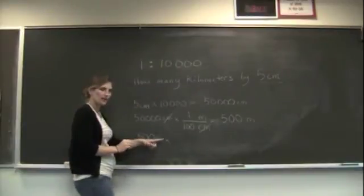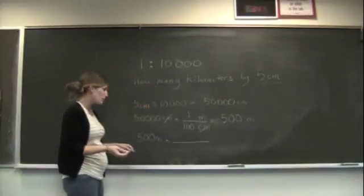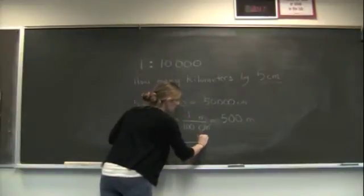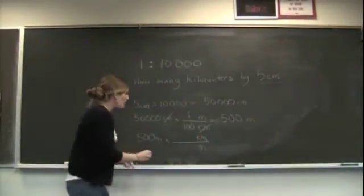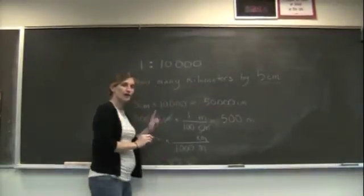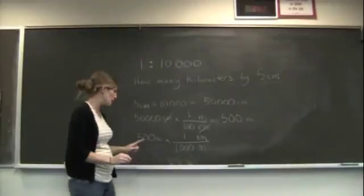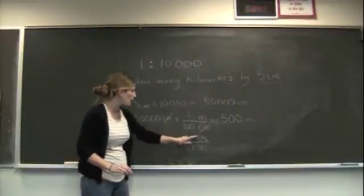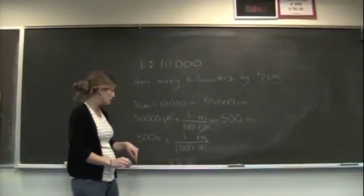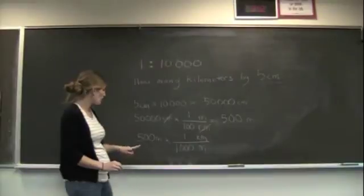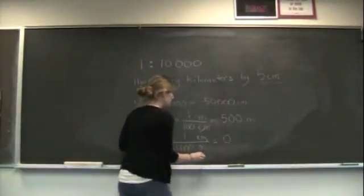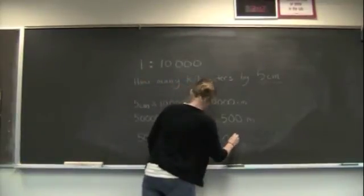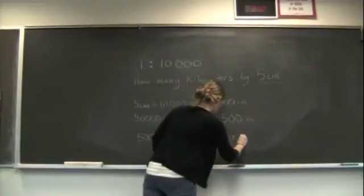So we're going to do that the same way. We're going to set it up, multiply it by some unit conversion, and we're going to put meters on the bottom and kilometers on the top. There are 1,000 meters for every 1 kilometer. So when we calculate this, 500 meters times 1 kilometer divided by 1,000 meters, that's going to be 0.5 kilometers.